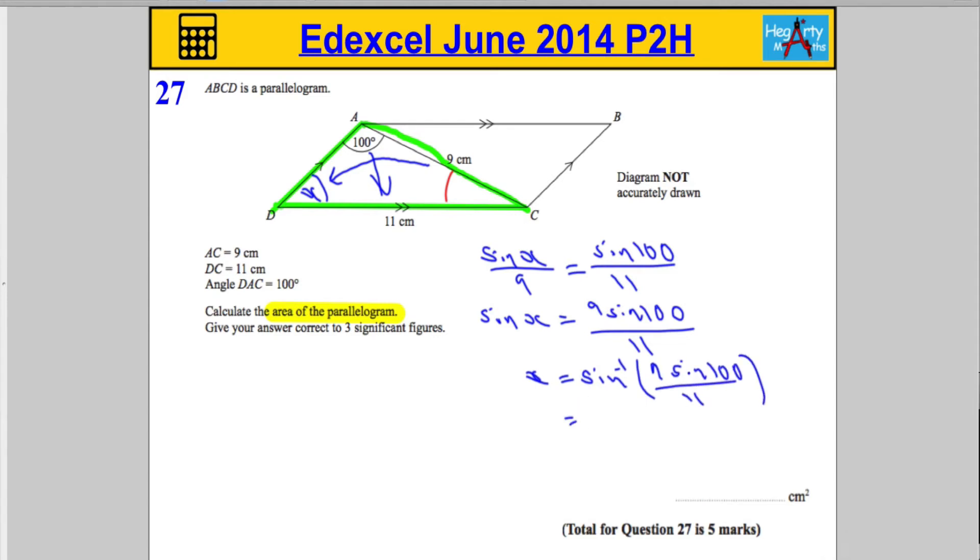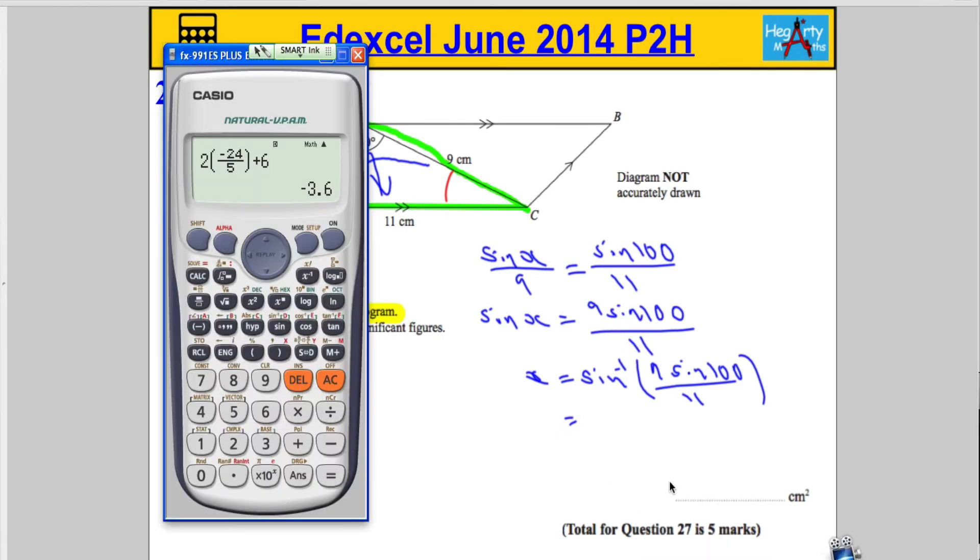Let's get the calculator out here. So, I need to do the inverse sine of, and it's a fraction, and the fraction is 9, sine 100, remember to close that little bracket off there, over 11. Come back outside, and close the bracket off completely. Hit equals,